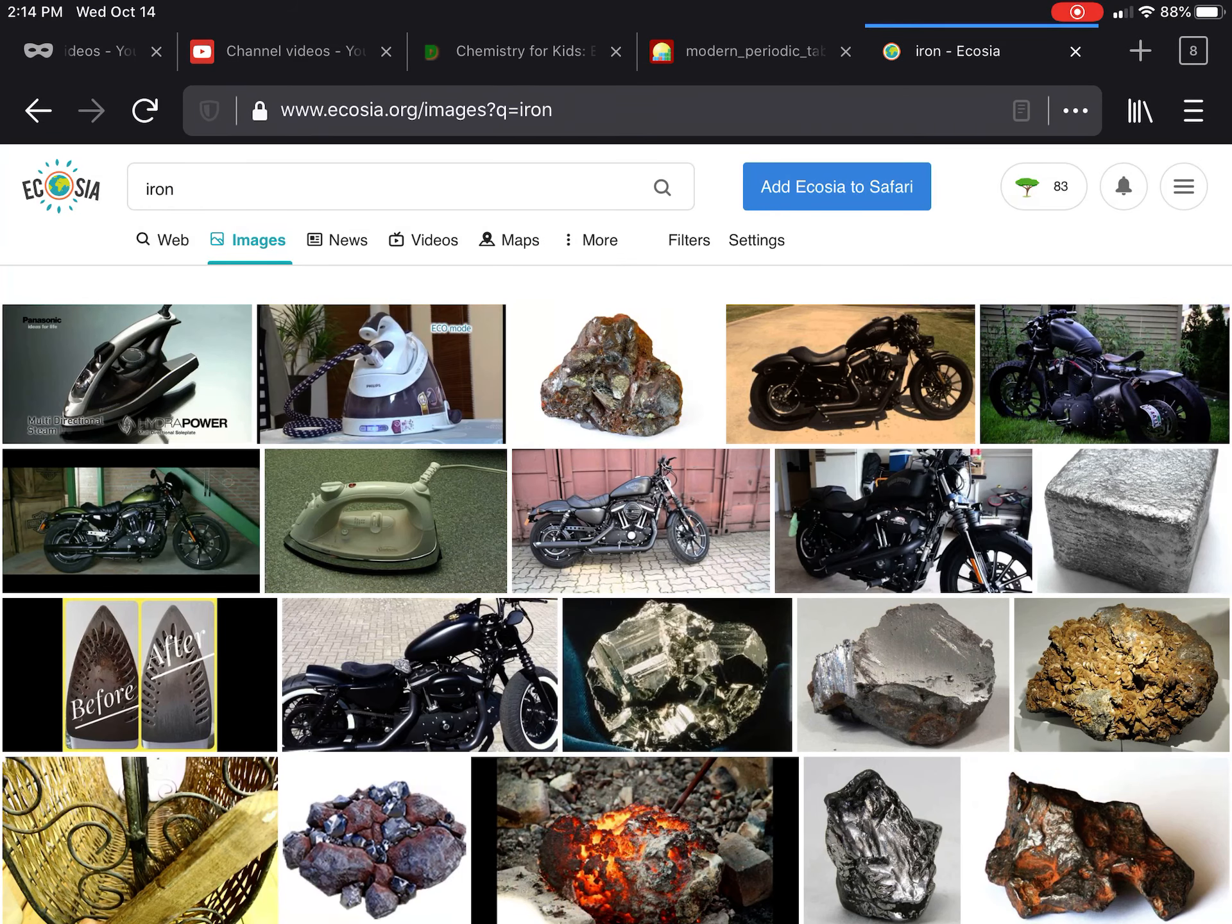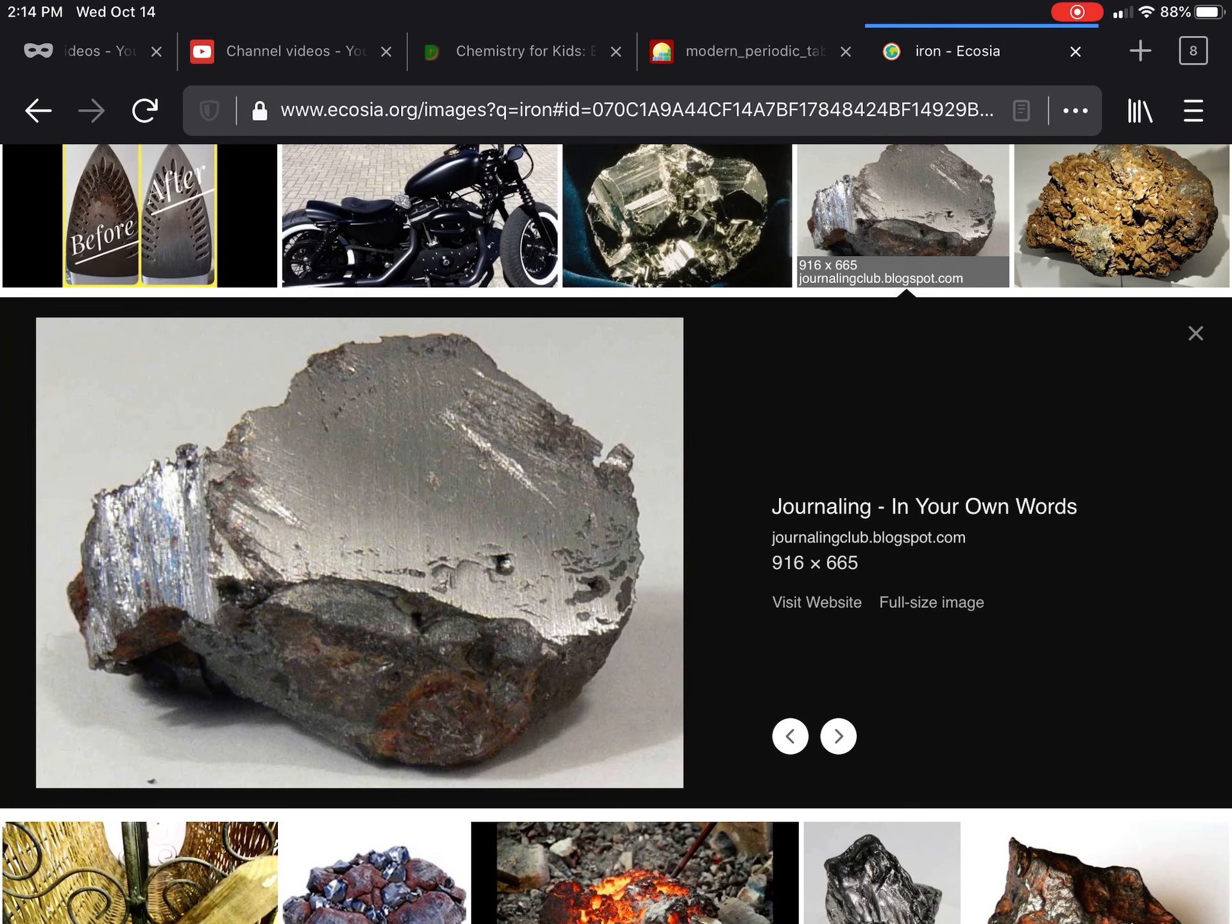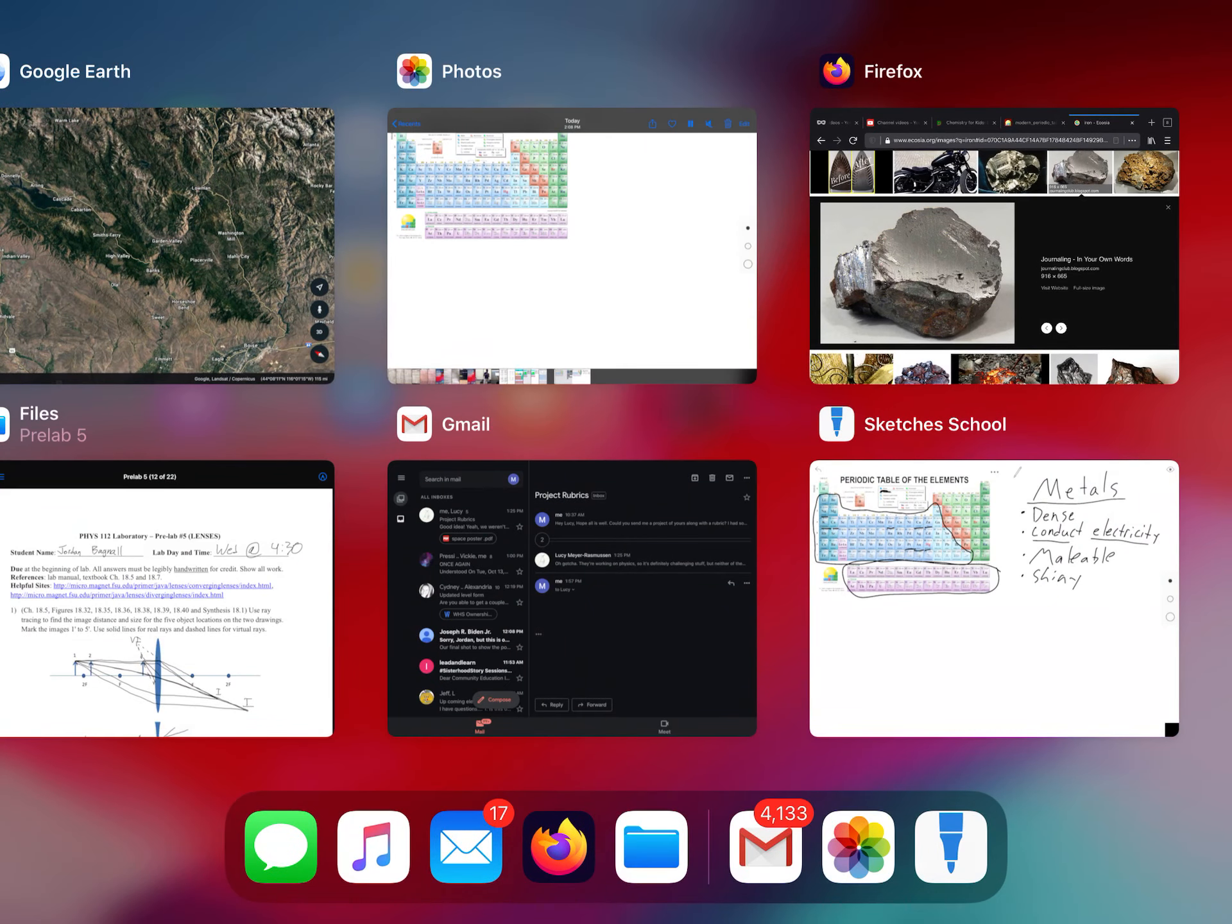So here's a good chunk of pure iron. You can see it's shiny, it's going to conduct electricity, it's quite dense so heavy. Yeah, there you go—that is what makes up metals.